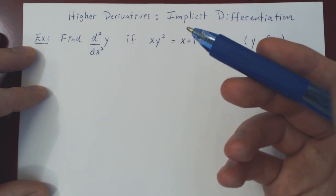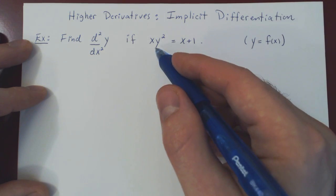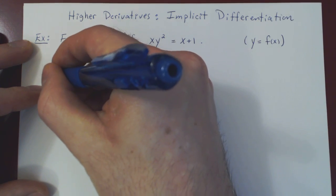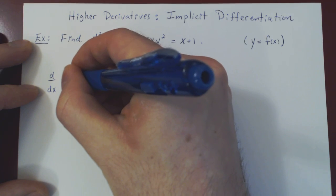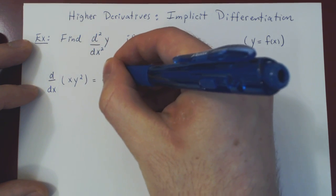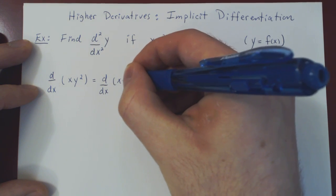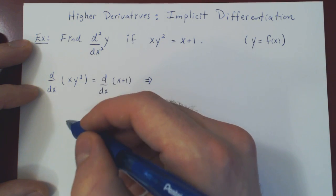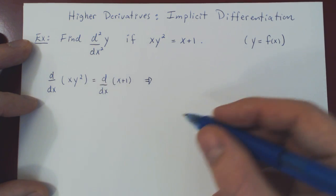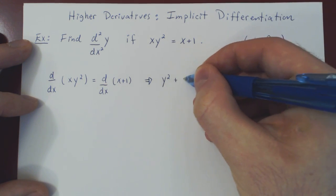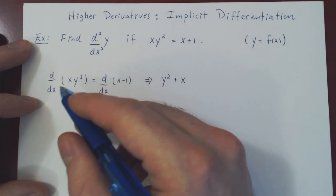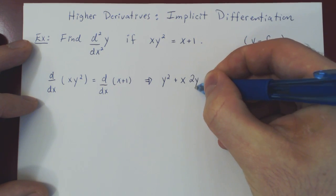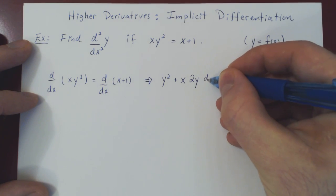To find the second derivative, we have to first find the first derivative. Since y is a function of x and both sides are equal, they must have the same derivative with respect to x. We have a product between x and y², so we must use the product rule: derivative of x is 1 times y², plus x times the derivative of y² with respect to x. Applying the chain rule carefully gives 2y times dy/dx.